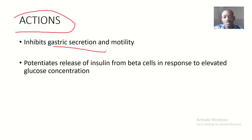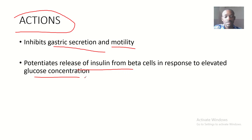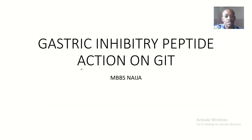Gastric inhibitory peptide inhibits gastric secretion and motility. It also potentiates the release of insulin from beta cells in response to elevated glucose concentration. So when there is increasing glucose concentration, insulin will be secreted to facilitate glucose uptake. This is the gastric inhibitory peptide action on the gastrointestinal system.